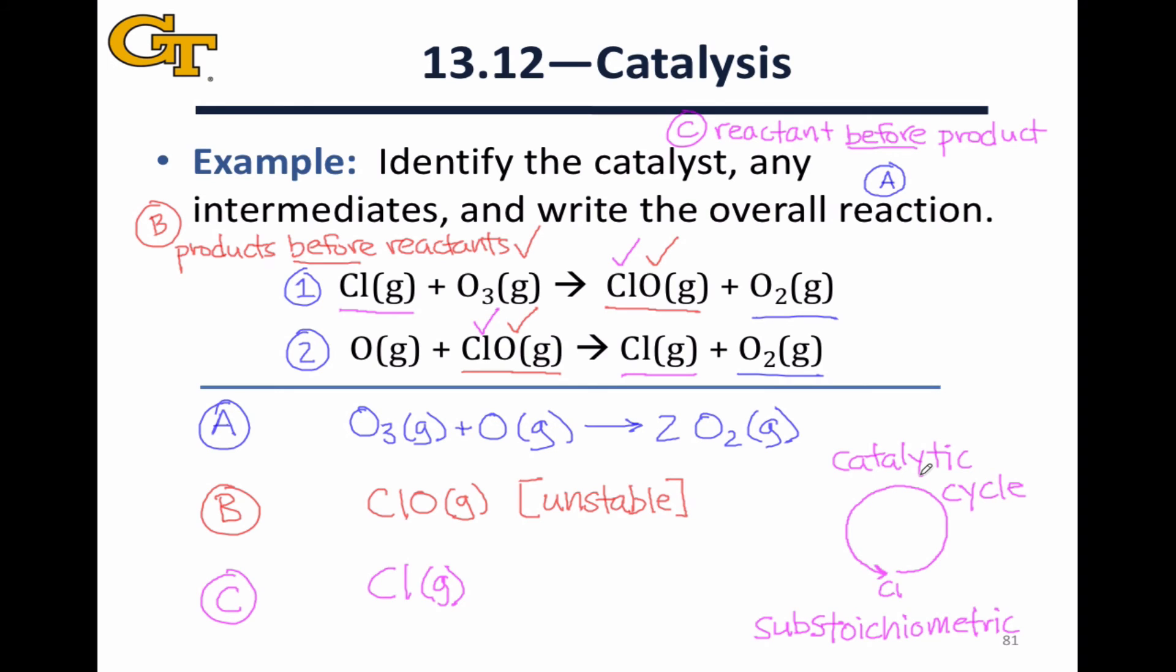Ideally, in an ideal world, we could use only one atom of chlorine to catalyze this entire reaction. Of course, the catalyst is going to be subject to decomposition and side reactions, so we typically have to use a little bit more than one molecule, but it goes to show you the power of catalysis. A very small amount of a species can catalyze a chemical reaction.